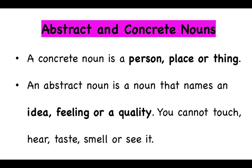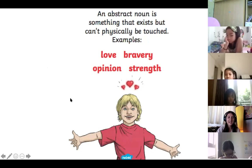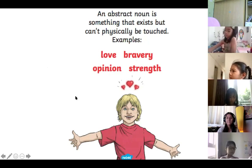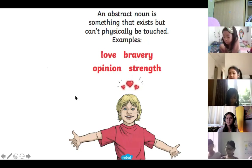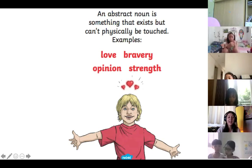This is the first time we'll be learning about abstract nouns. An abstract noun is a noun that names an idea, a feeling within you, or a quality. With an abstract noun, you cannot touch it, hear it, taste it, smell it, or see it. An abstract noun is something that exists but can't physically be touched. Have a look at these examples: love, bravery, opinion, strength. These words are all nouns — they're all things — but we can't touch them. Even though we can't touch or see or smell them, it doesn't mean they don't exist.